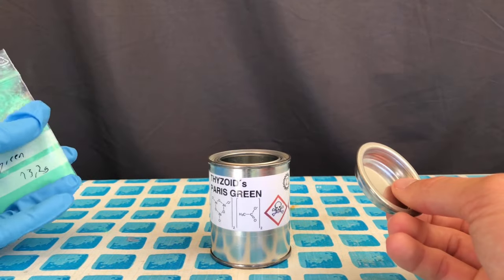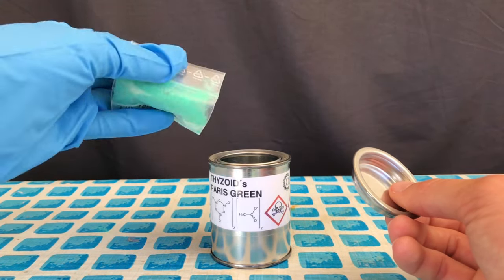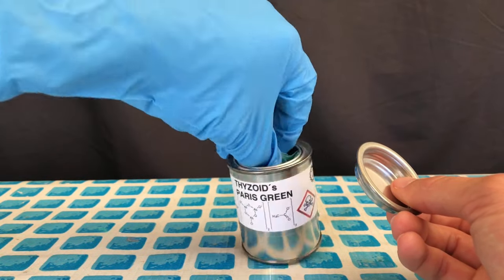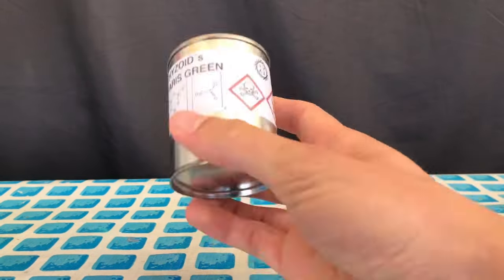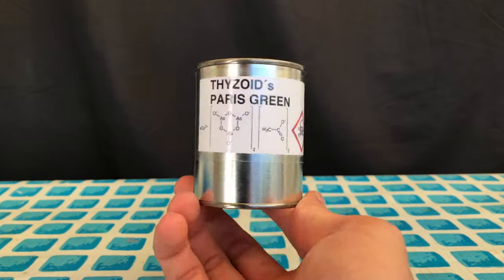For aesthetic reasons and for safety, the plastic bag was put into a steel paint can which has been labeled correctly. I only wore one glove because I didn't want to contaminate the outside of the can, but I still washed my hand very thoroughly afterwards.